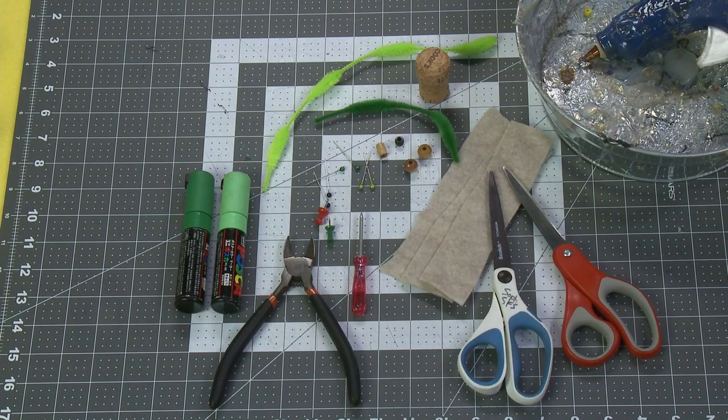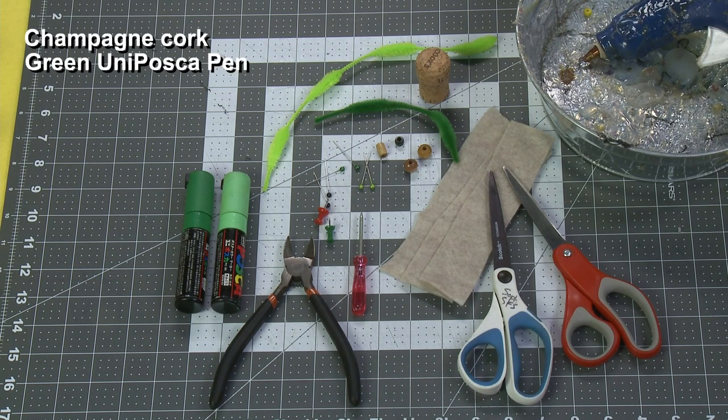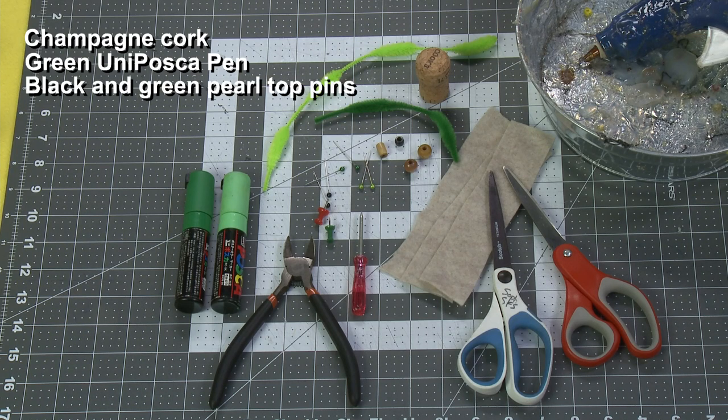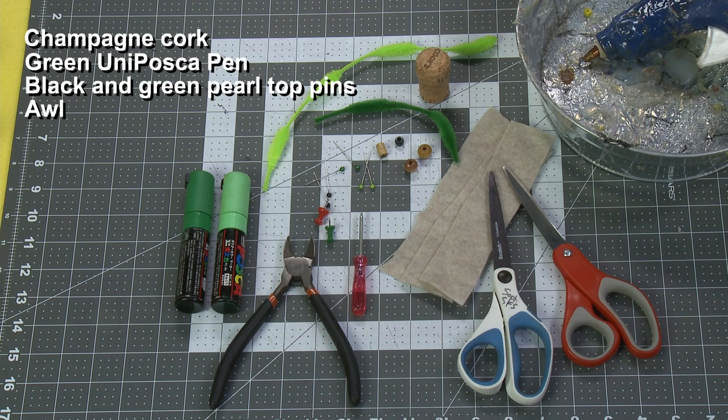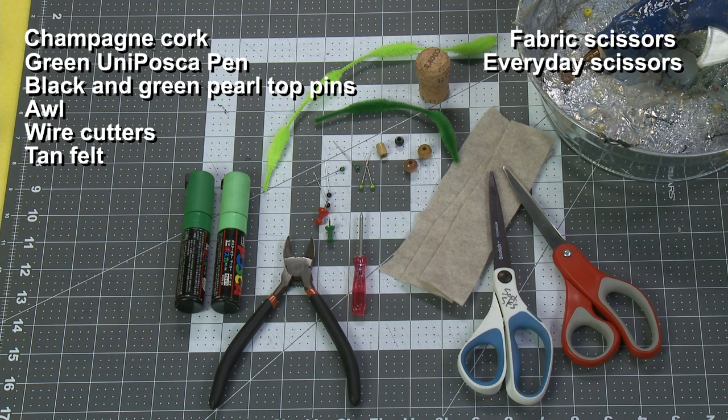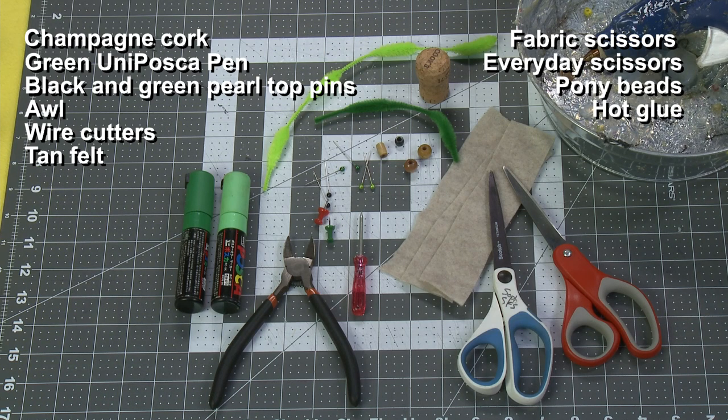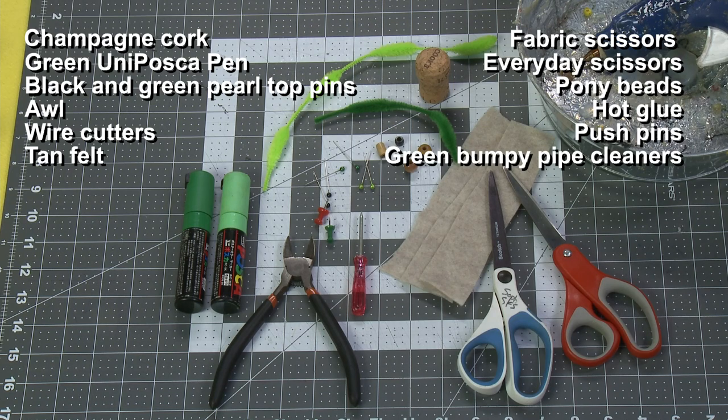For this project you will need a champagne cork, green Uni Posca paint pens, black and green pearl topped pins, an awl, wire cutters, tan felt, fabric scissors, everyday scissors, black brown white pony beads or wooden beads, hot glue gun, two push pins, and green bumpy pipe cleaners.